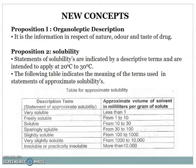Very soluble means soluble in less than 1 ml of solvent. Freely soluble: 1 to 10 ml. Soluble: 10 to 30 ml. Sparingly soluble: 30 to 100 ml. Slightly soluble: 100 to 1000 ml. Very slightly soluble: 1000 to 10,000 ml. Insoluble or practically insoluble: more than 10,000 ml of solvent.